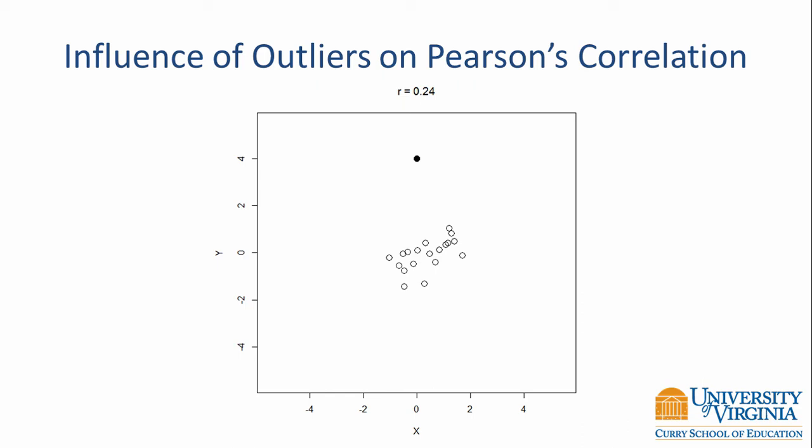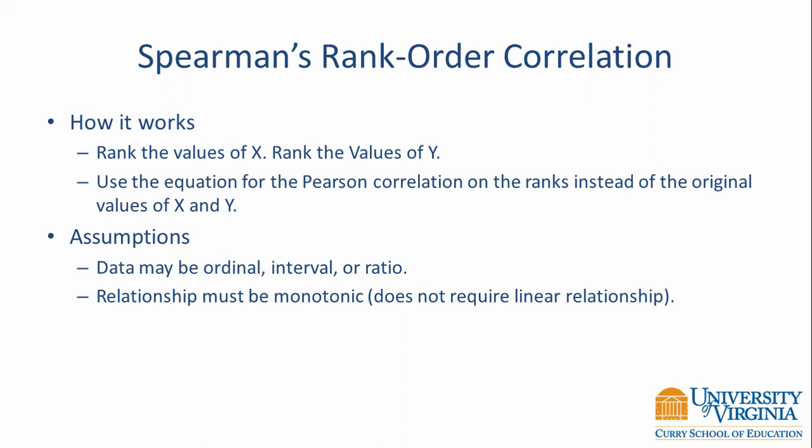When you have a bivariate outlier, one choice is to omit that observation, but that reduces your available data. A better idea is to use a different correlation coefficient. Spearman's rank order correlation is an option when you have bivariate outliers. It works much the same way as the Pearson correlation, but instead of correlating original values, you first rank the values of x, then rank the values of y, and use those ranks in the Pearson formula. Spearman's correlation allows data that may be ordinal, interval, or ratio, and the relationship only has to be monotonic — meaning as one variable increases, the other increases, or as one decreases, the other decreases.